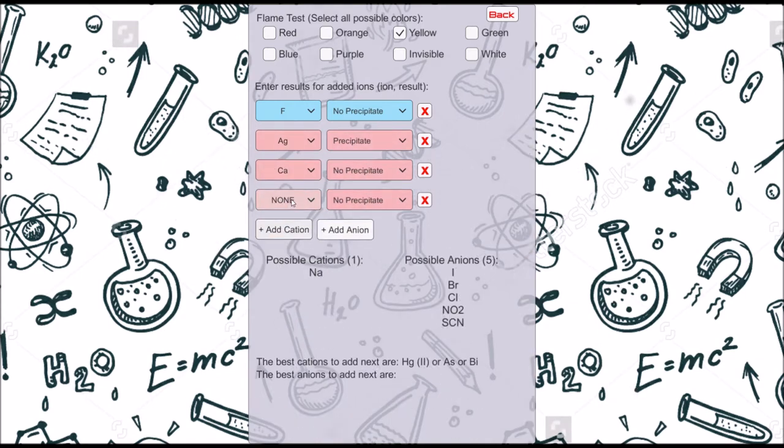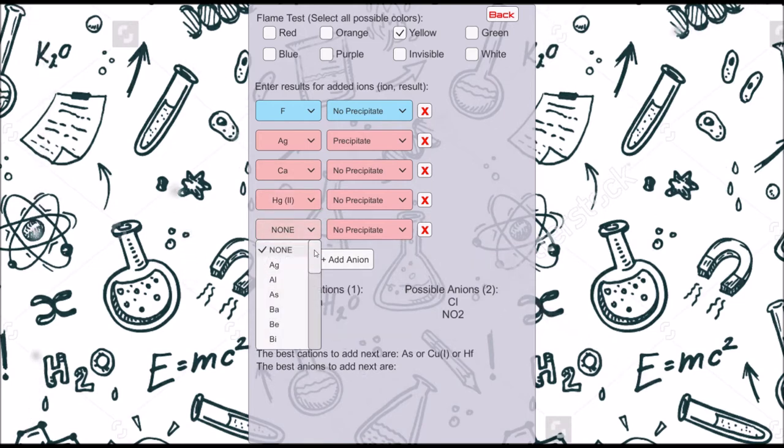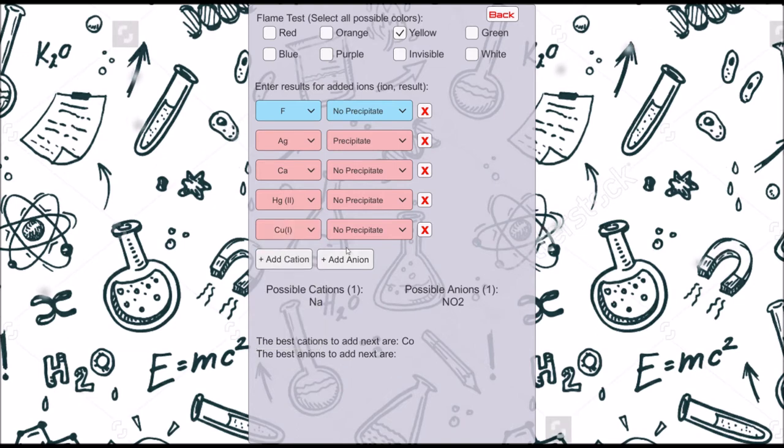This app runs on a computer algorithm I designed, which compares user inputted data with trends of over 650 compounds and determines all possible compounds that the user may have, allowing users to more quickly and accurately identify an unknown compound compared to conventional methods.